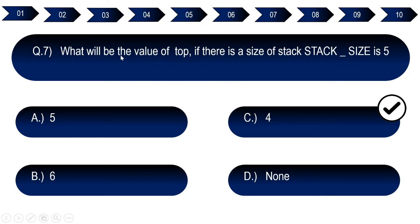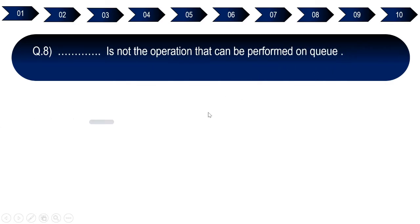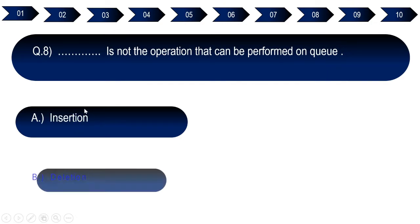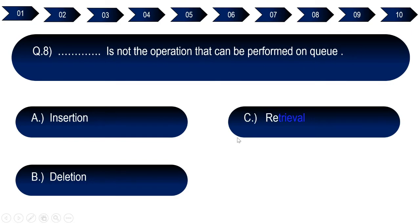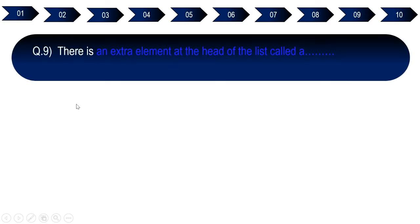Question number eight: Which of the following is NOT an operation that can be performed on a queue? Option A: insertion. Option B: deletion. Option C: retrieval. Option D: traversal. The right answer for question number eight is option D, traversal.